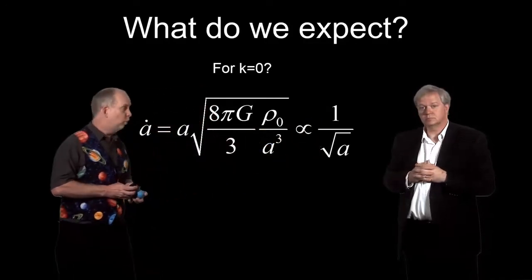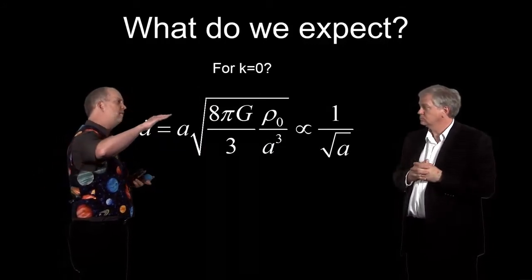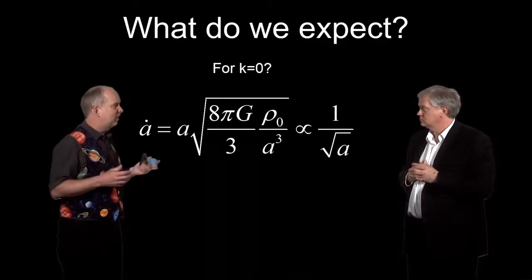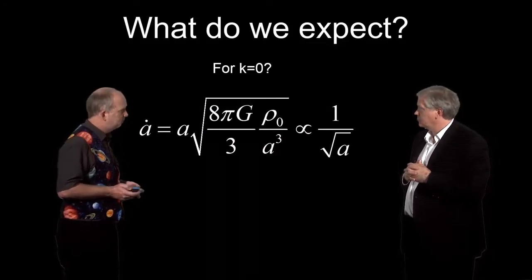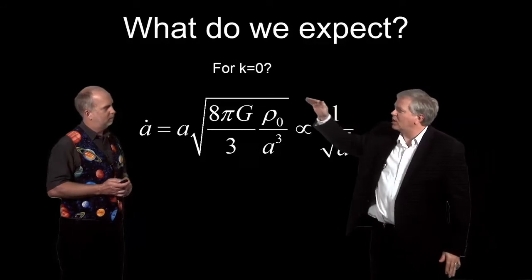No matter how big A gets, this is always going to be one over the square root of a number. But as the universe gets older and older and older and bigger and bigger, the rate of expansion will decrease, but it will never reach zero. As A goes to infinity, it will reach zero, but not before infinity. So we expect the universe to sort of grind to a halt. It doesn't quite reach the halt.